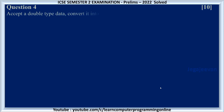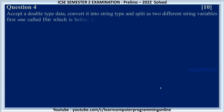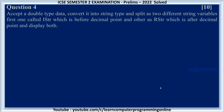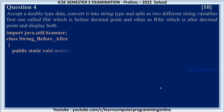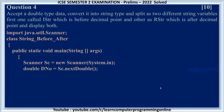Question 4. Accept a double type data, convert it into String type and split into two different String variables: the first one called istr which is before the decimal point, and the other as rstr which is after the decimal point, and display both. We need to take input of double type data, so import java.util.Scanner as usual. Declare the class and main method, create the Scanner object: Scanner sc equal to new Scanner(System.in). double dNumber equal to sc.nextDouble() will take a double type number. You can also give a print statement to prompt the user to enter the double data.